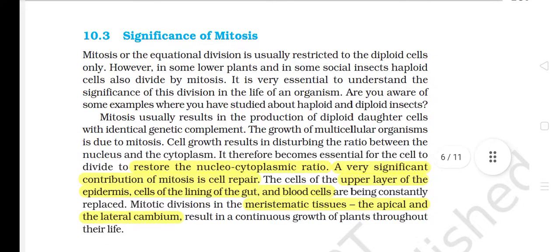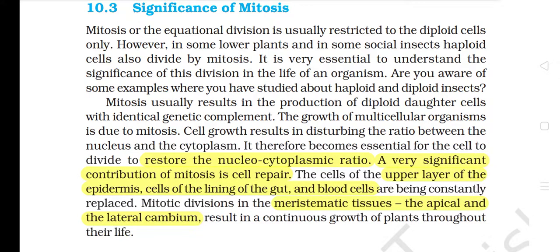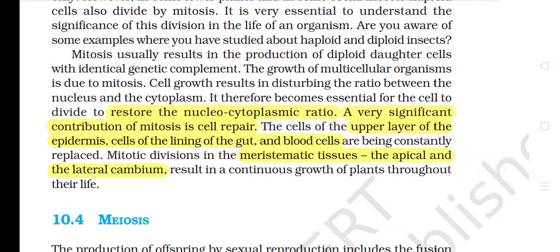10.3 Significance of Mitosis. Mitosis or the equational division is usually restricted to the diploid cells only. However, in some lower plants and in some social insects, haploid cells also divide by mitosis. Mitosis usually results in the production of diploid daughter cells with identical genetic complement. The growth of multicellular organisms is due to mitosis. Cell growth results in disturbing the ratio between the nucleus and the cytoplasm; it therefore becomes essential for the cell to divide to restore the nucleocytoplasmic ratio.